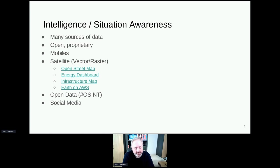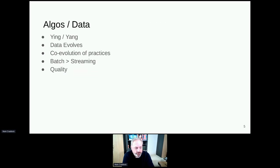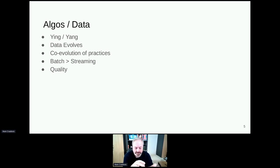There are many sources of data we can use — open and proprietary sources. We can use data from mobile phones, satellite imagery, or open data. A good source for understanding what you can do with data is the open source intelligence community — search for #OSINT. There's also lots of insight we can get from social media. The thing about data and doing analysis is there's always this yin and yang of algorithms and data, and also the methodology.